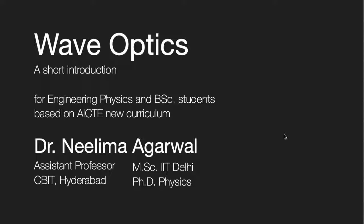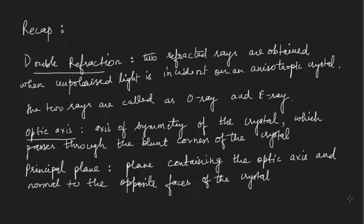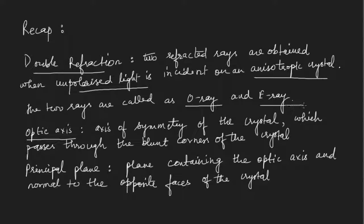In the last few lectures, we started understanding the phenomena of polarization. After understanding how polarization is done by reflection and transmission, we started discussing the beautiful phenomena of double refraction. In double refraction, when unpolarized light is incident on an anisotropic crystal, instead of one refracted ray we get two rays — known as the ordinary ray and the extraordinary ray.